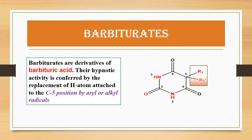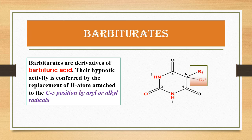Barbiturates are basically the derivatives of barbituric acid. Their hypnotic activity is confirmed by the replacement of the hydrogen atom attached to the C5 position by aryl or alkyl radicals. The barbiturates, which are CNS depressant drugs, are derived from barbituric acid by substitution reaction, because barbituric acid itself does not have any hypnotic or CNS depressant activity. This activity can be confirmed by the replacement or substitution of different functional groups like aryl rings or alkyl radicals — saturated or unsaturated side chains — at the C5 position.